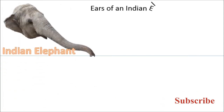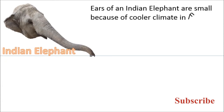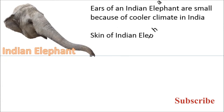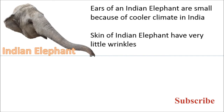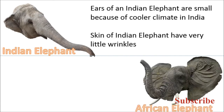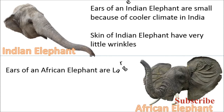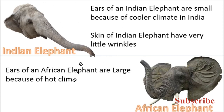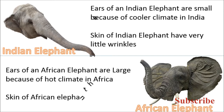Ears of an Indian elephant are small because of the cooler climate in India, and the skin of an Indian elephant has little wrinkles. Ears of an African elephant are large because of the hot climate in Africa, and the skin of an African elephant has more wrinkles.